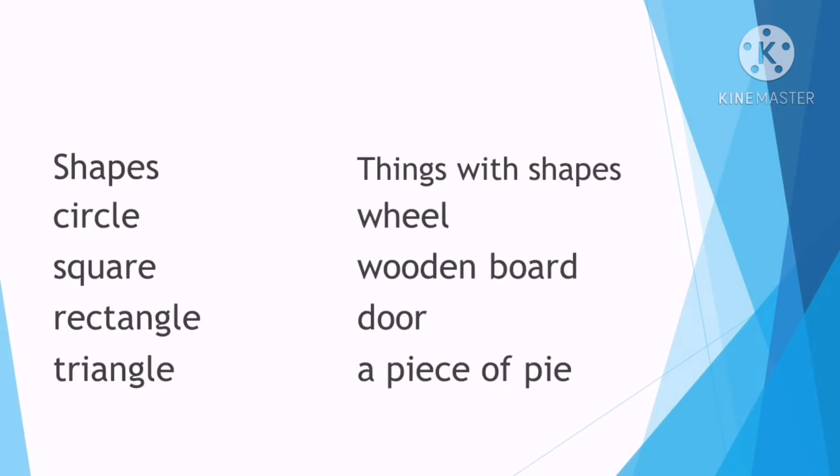Now, let's try to study the words that were mentioned. Under the shapes, we have the circle, square, rectangle, and triangle. There are also mentioned things with shapes, which include wheel, wooden board, door, a piece of pie.